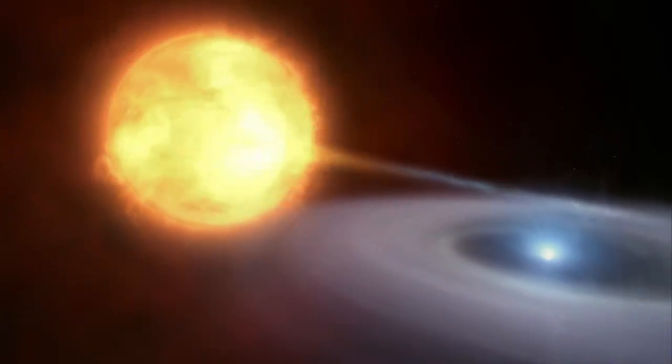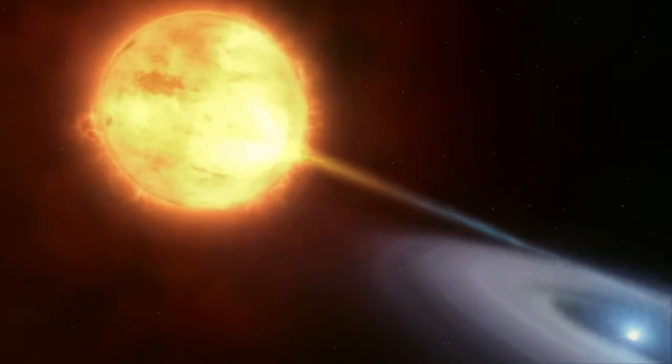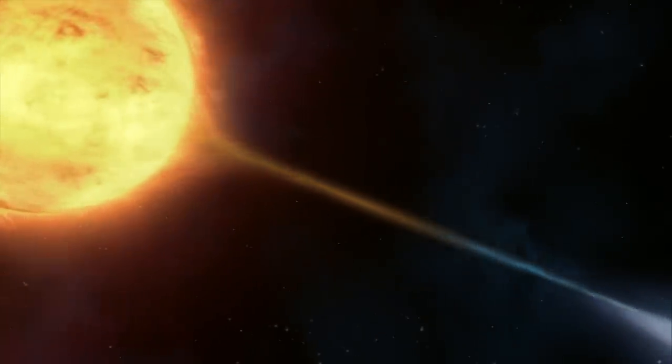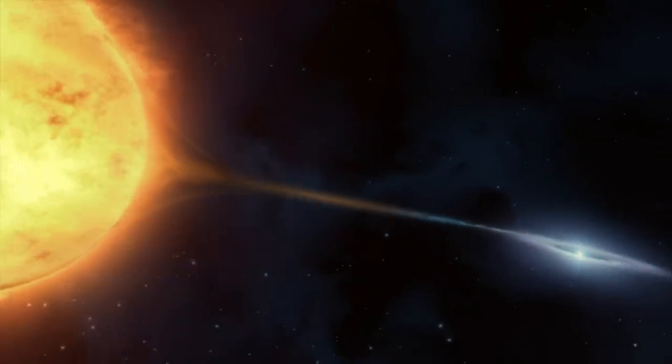The reason for this odd structure is hidden at the nebula's core. The Twin Jet Nebula is a bipolar nebula, and the characteristic shape is thought to be caused by there being not one, but two stars at its heart.